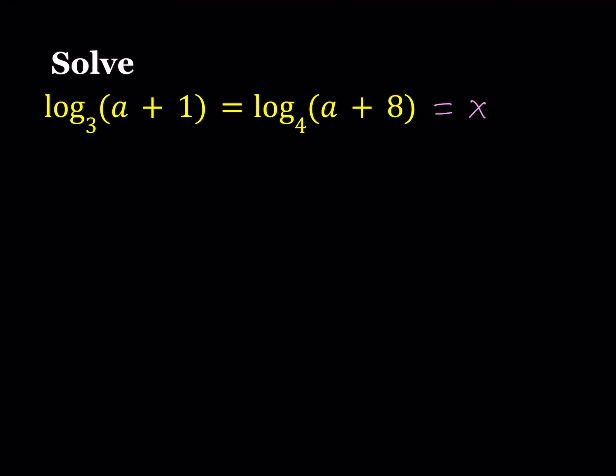Now we're going to set this equal to x and this means two things. First of all, I can say that log₃(a+1) equals x, and this implies from definition of logs 3^x equals a+1. And from the second equation, I get log₄(a+8) is also equal to x, and from here we get 4^x equals a+8.